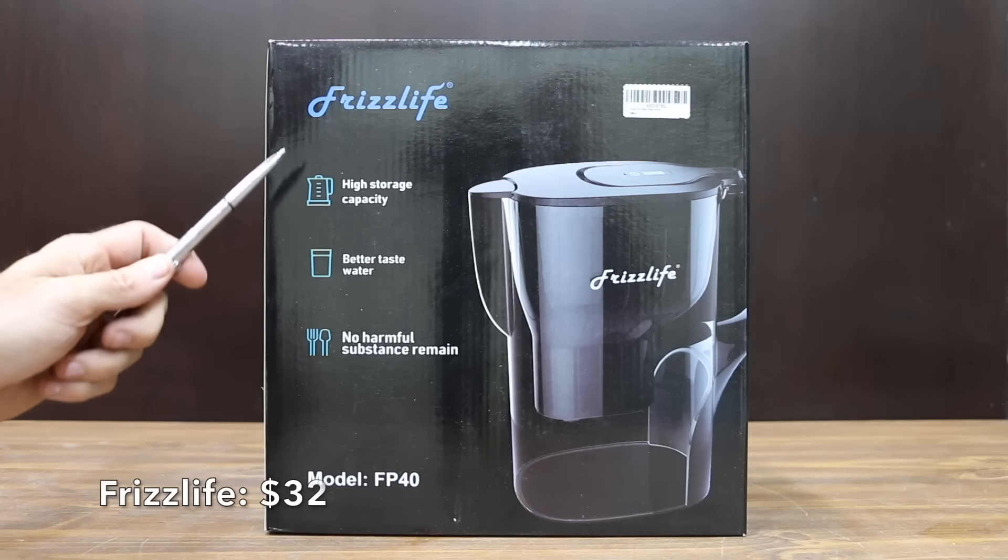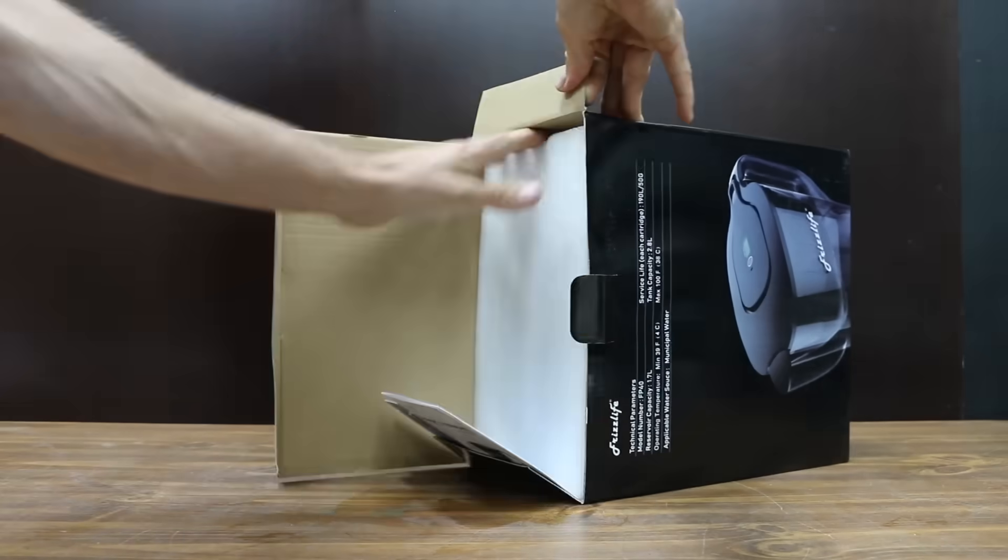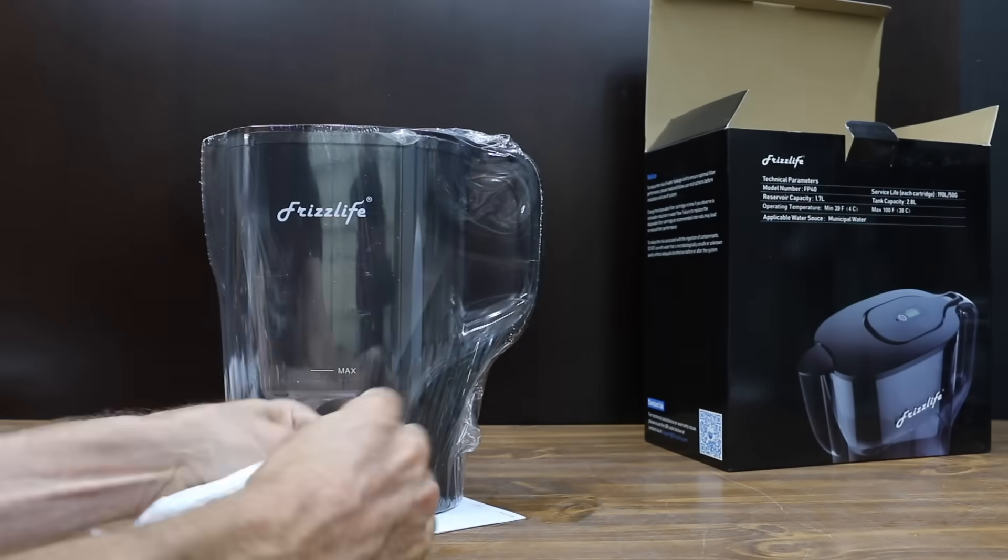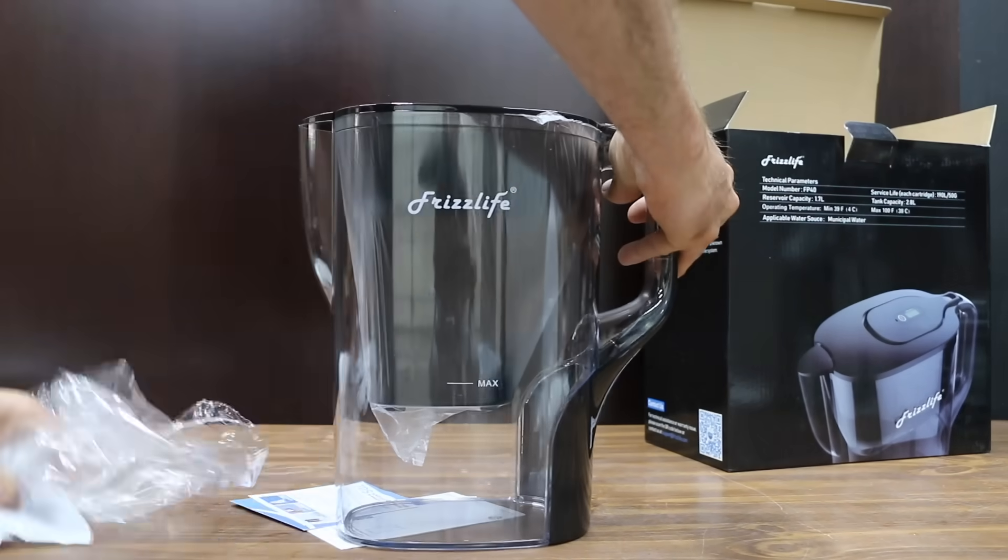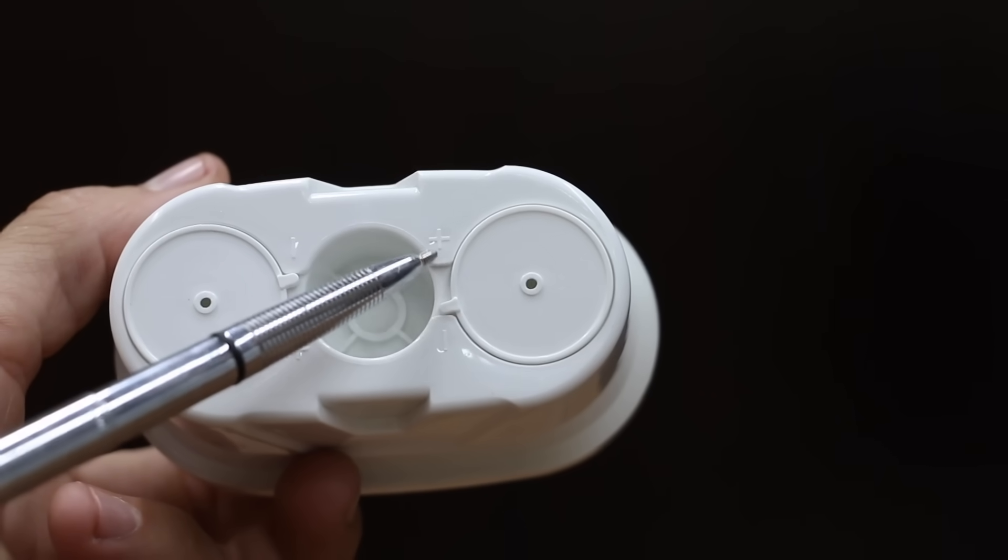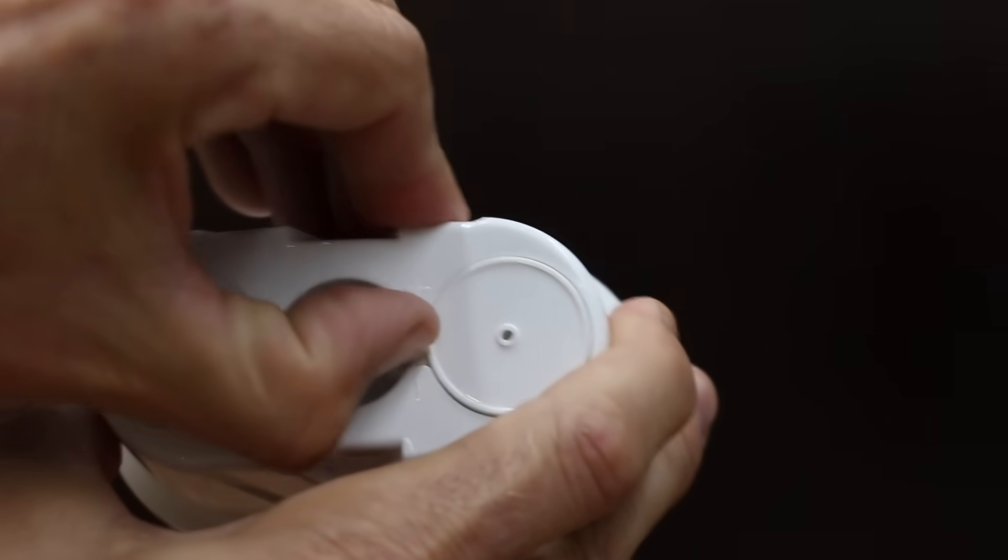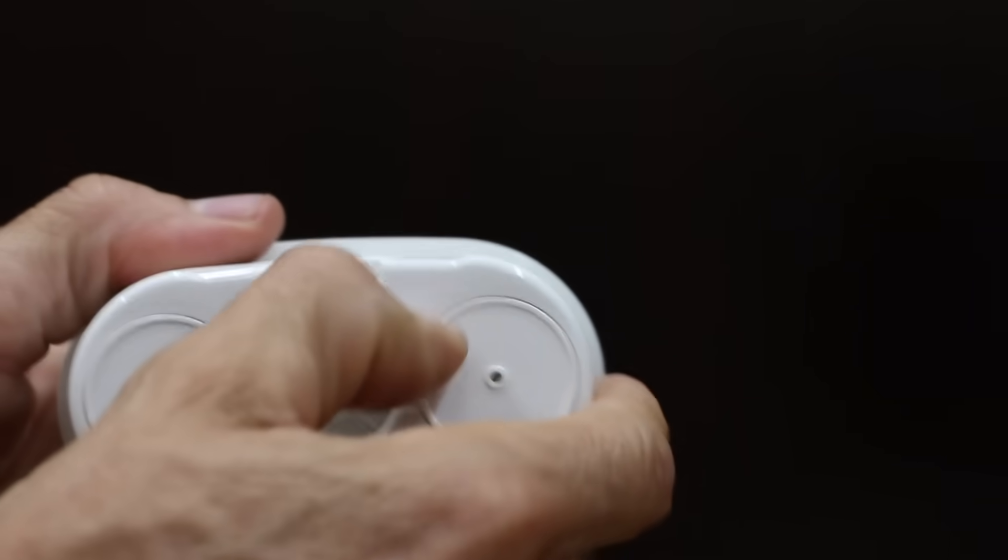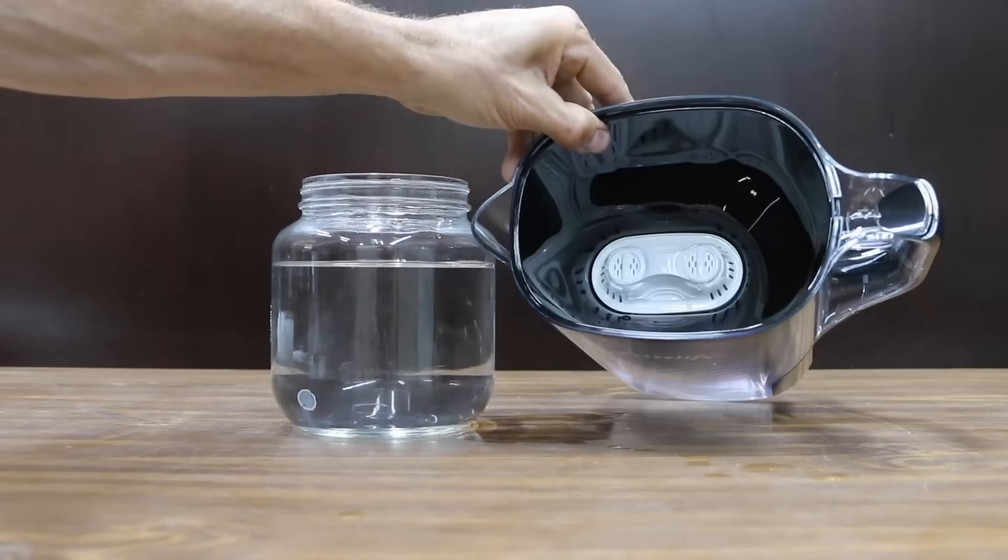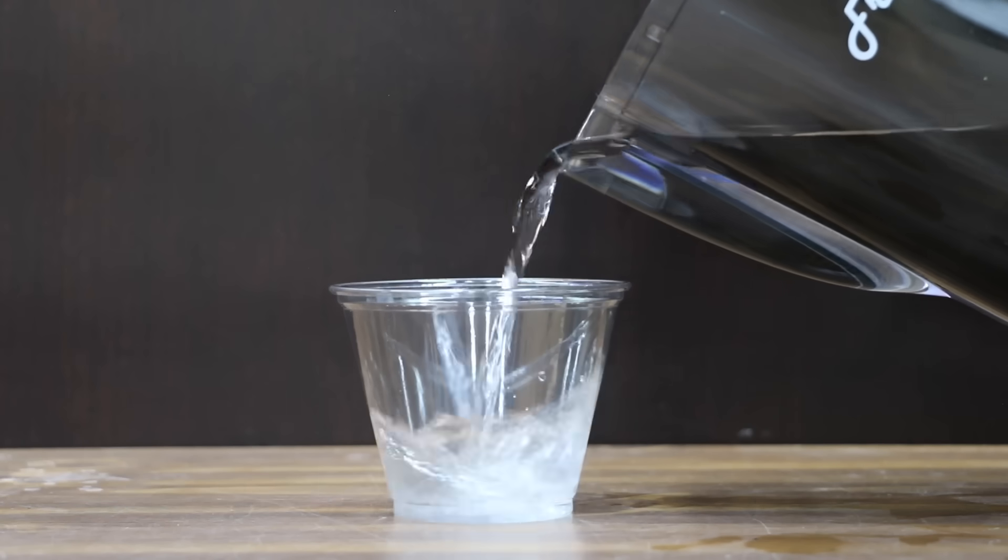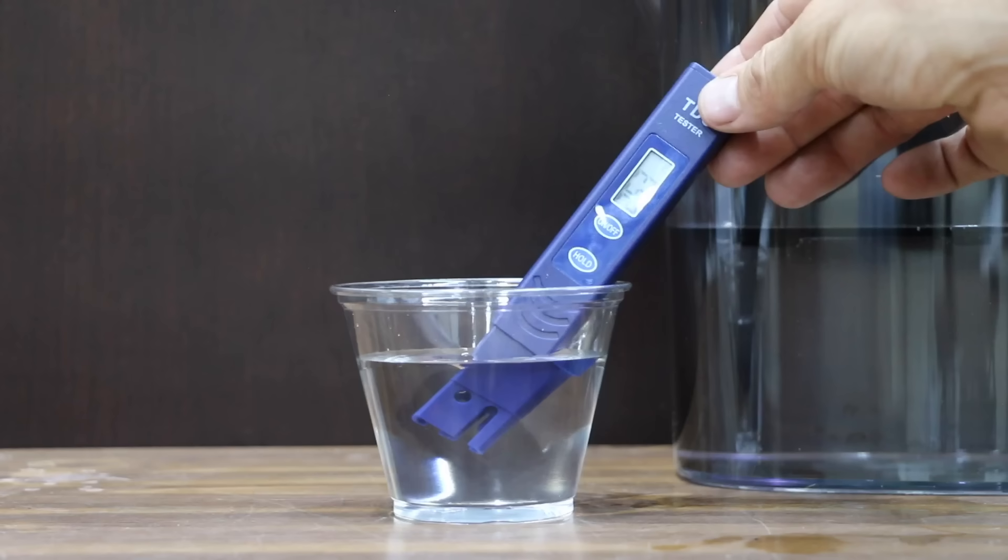At a price of $32 is this Frizz Life brand. Five-Stage Superior Filtration Performance. Reduces chlorine, fluoride, lead, heavy metals, and bad taste. The Frizz Life brand is made in China. The Frizz Life has an adjustable filter. By moving clockwise, the water flows faster. By moving counterclockwise, the filter does a better job of filtering the water. I'm going to keep the filter in a position to make sure we're filtering the water as good as possible. 253 parts per million for the Frizz Life.